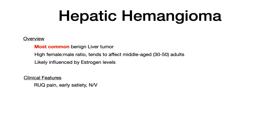Let's start with hepatic hemangioma — really not a whole lot to memorize. This is the most common benign liver tumor, and that's important for Step 2 and beyond, which focuses a lot more on epidemiology. So if you have a patient and you're thinking this is probably some type of benign liver growth, you should probably pick hepatic hemangioma based simply on the fact that it's the most common benign liver tumor.